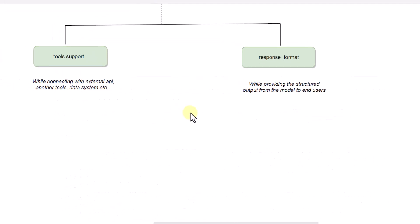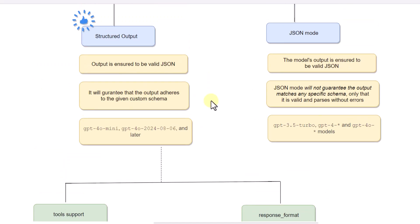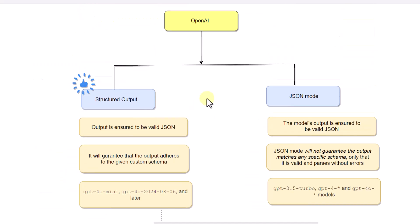Under structured output there are two options. One is tool support, which is useful when we are trying to connect to external APIs or other tools and data systems. The other option is response format, which is useful when you want to generate a structured output to the end user. I have already covered a sample application on how to invoke these two functionalities — I will provide that link in the description.